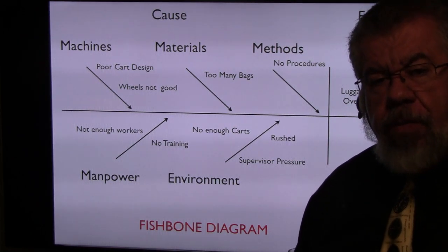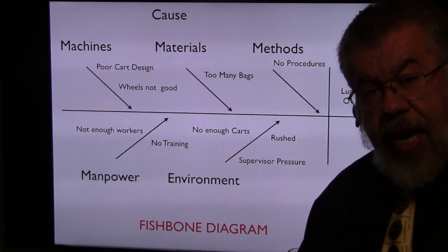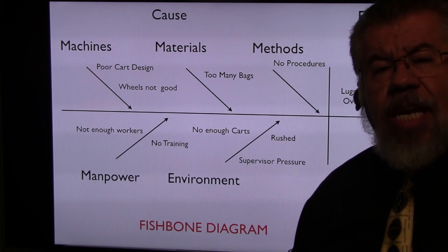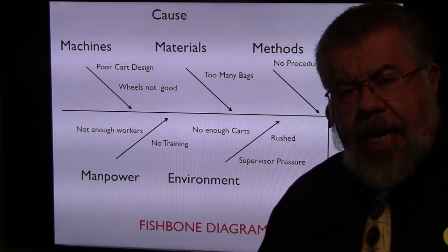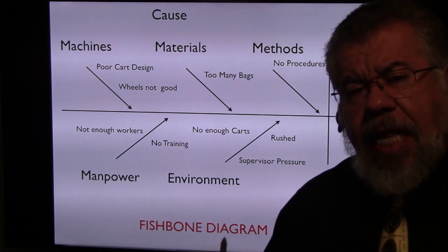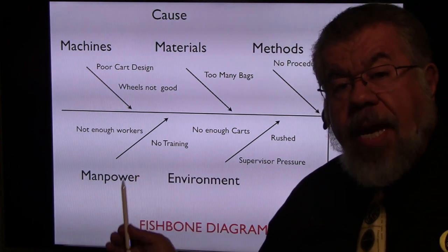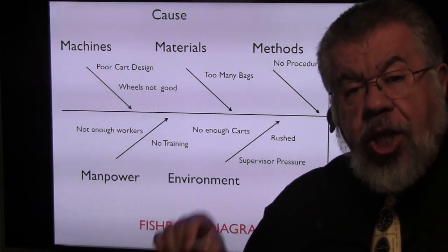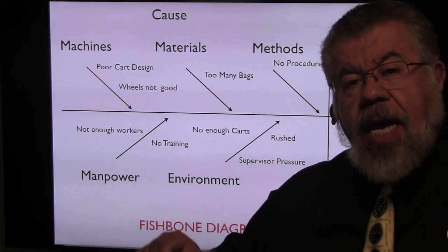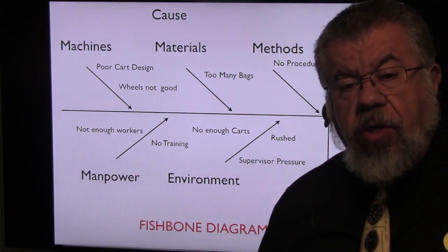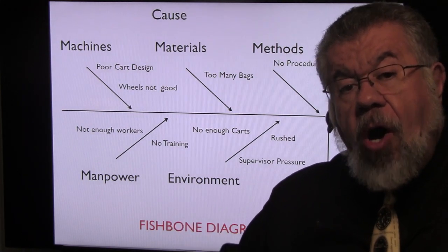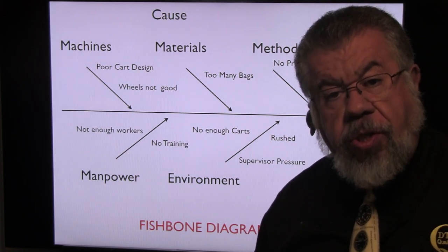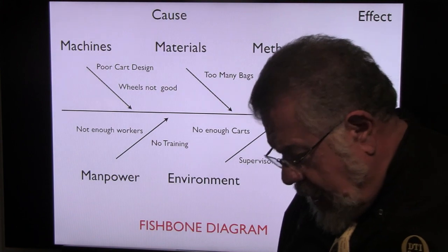In the traditional fishbone diagram, we're looking for causes to the effect. What we're going to do is still use the fishbone diagram, but in reverse. We're talking about taking the effect and making it the cause. So in the reverse fishbone diagram, the cause would be the change, and then the five Deming forces would focus in on how that cause affects those areas. That's why we call it the reverse fishbone diagram.